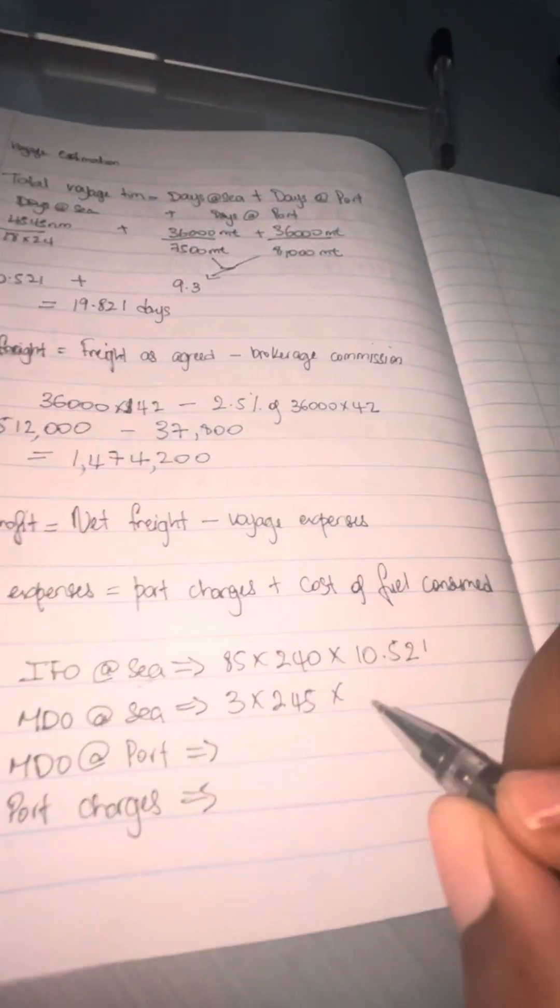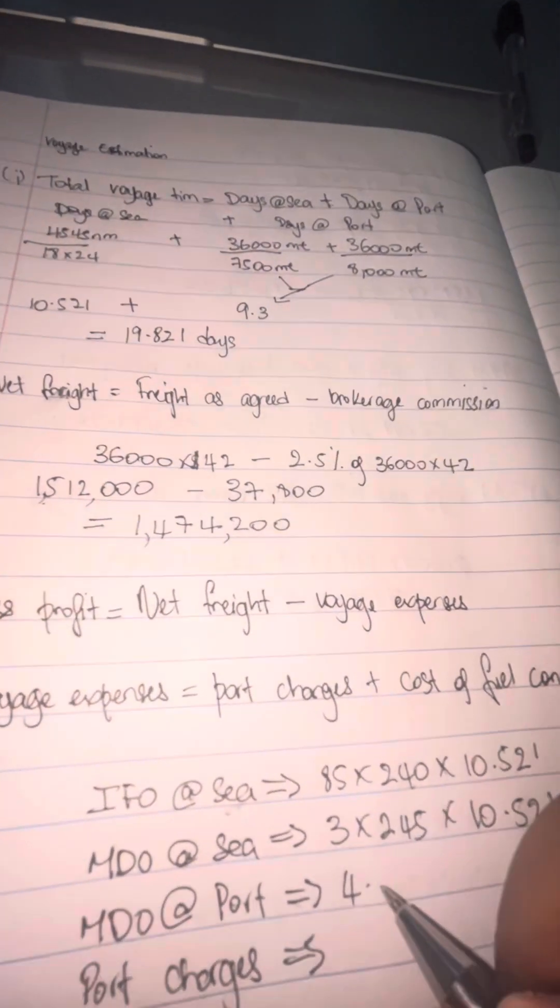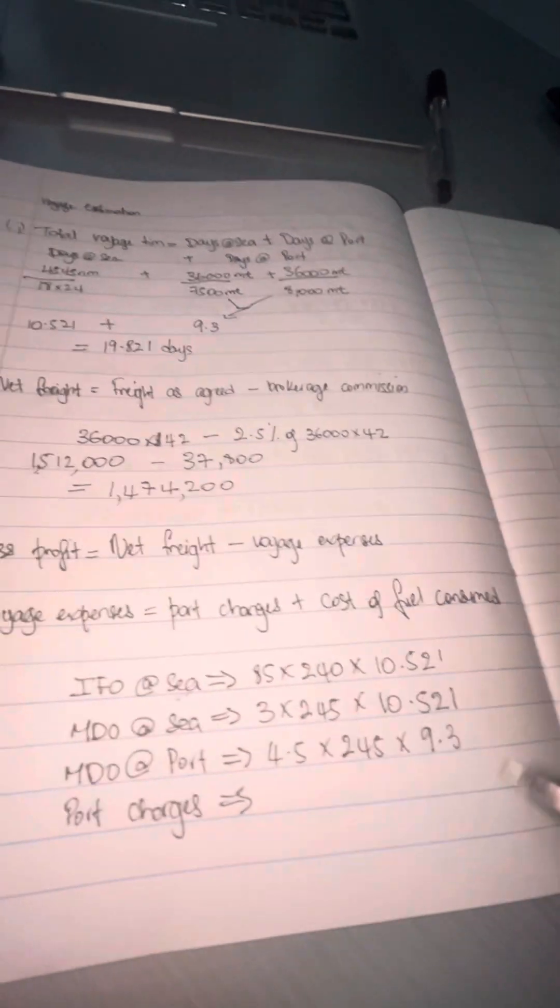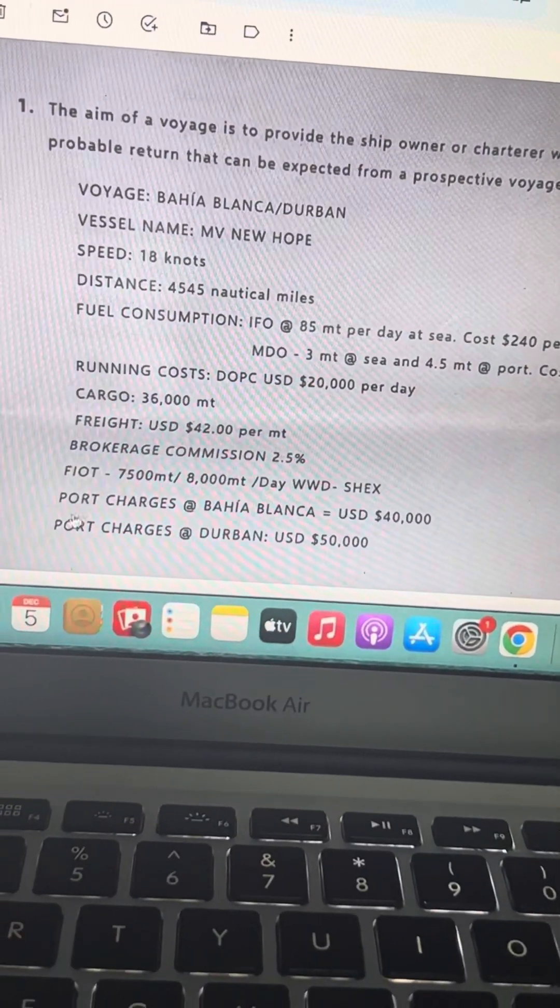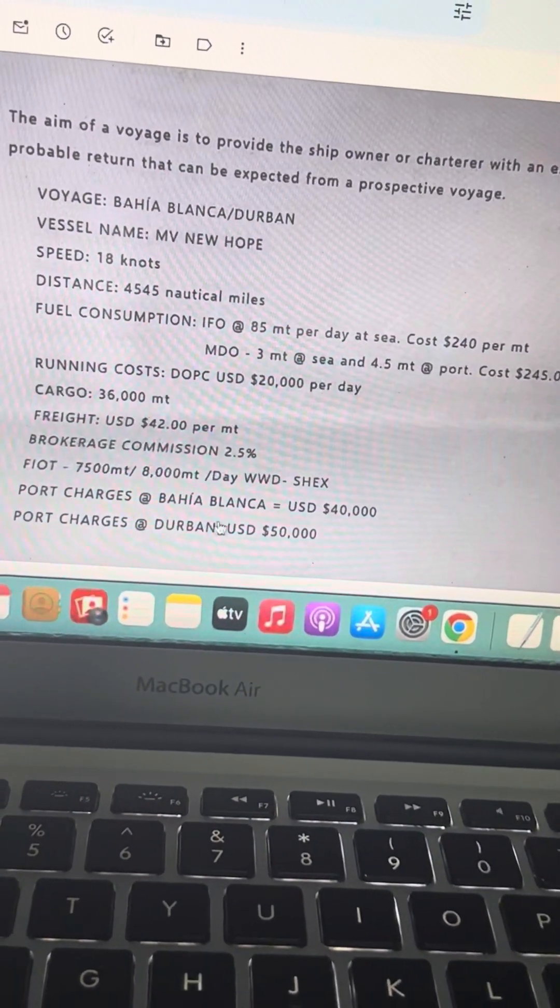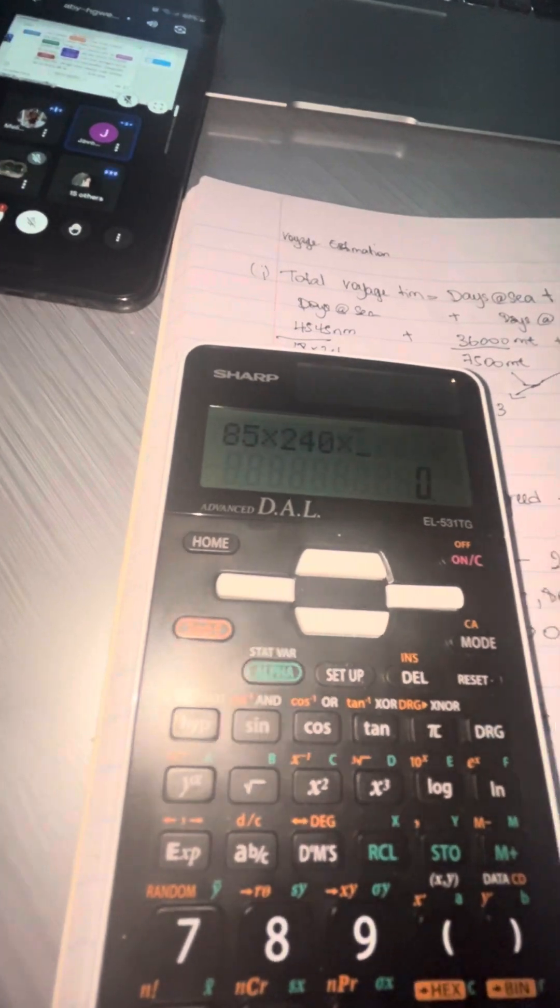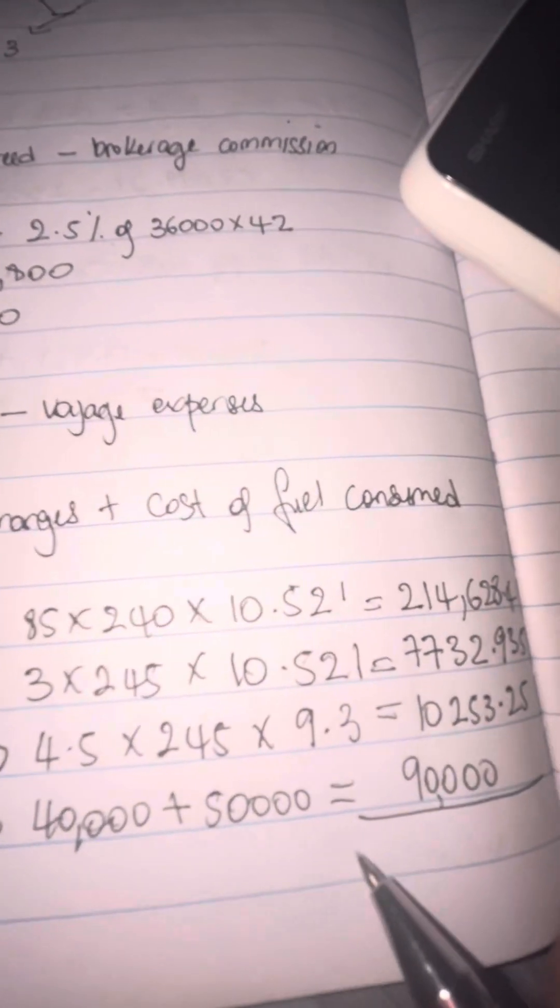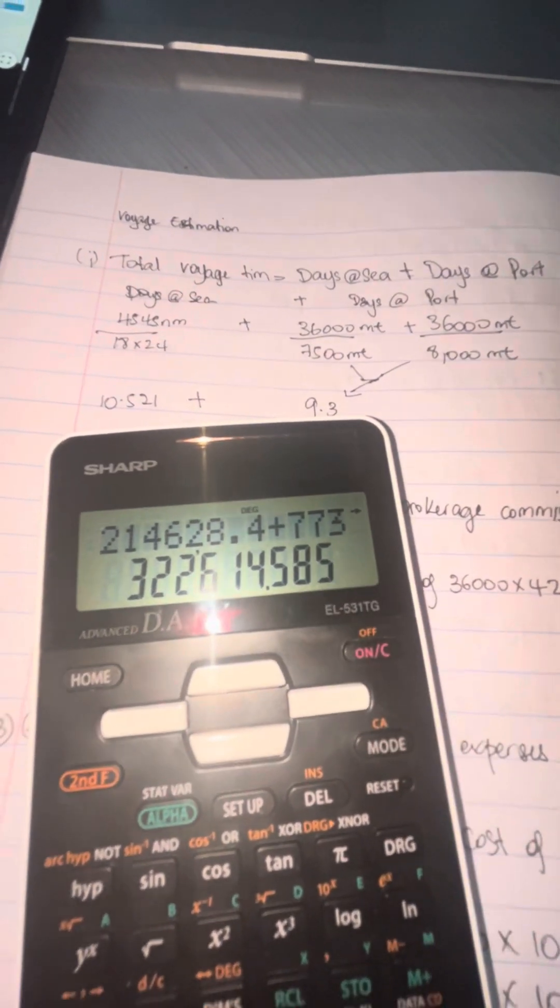Then you get the MDO. You have two MDOs—one is 3 metric ton used at sea, and 4.5 used in port. With MDO at port, it's 4.5 metric ton at 245 dollars per ton. It's the same for at sea—3 times 245 dollars. At port you use the 4.5 metric ton times 245 times the 9.3 days spent at port. You also add port charges: 40,000 at Bahía Blanca and 50,000 in Durban.